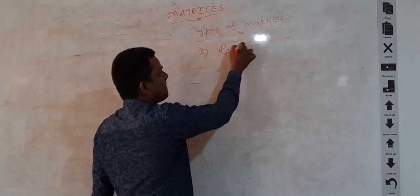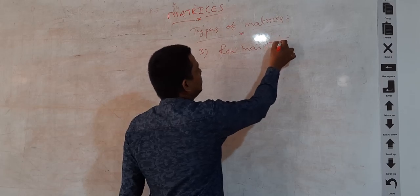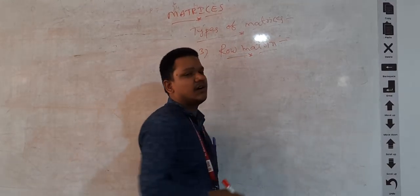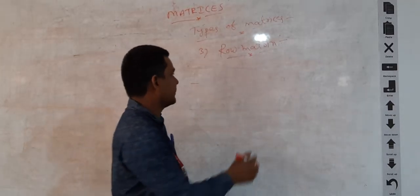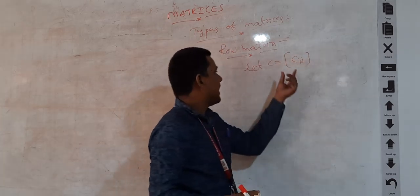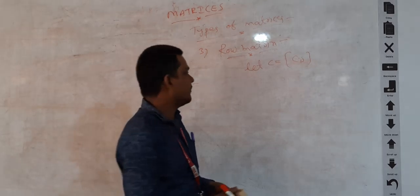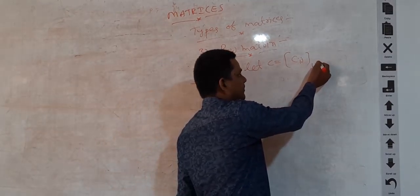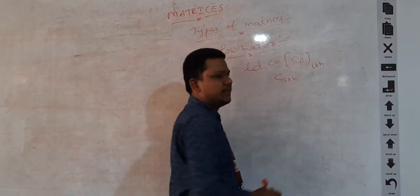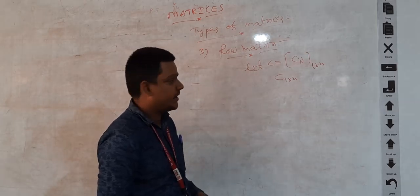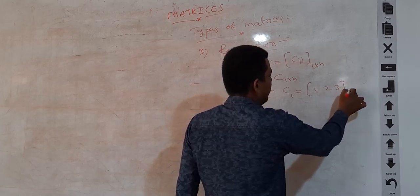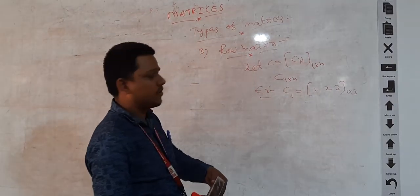Next is the row matrix. A matrix consisting of only one row is known as a row matrix. Let C be a matrix with elements of the form C-i-j. A matrix consisting of only 1 row has order 1 by n, and is known as the row matrix. For example, C1 is equal to [1, 2, 3] — 1 row and 3 columns. In this way we can define row matrices.